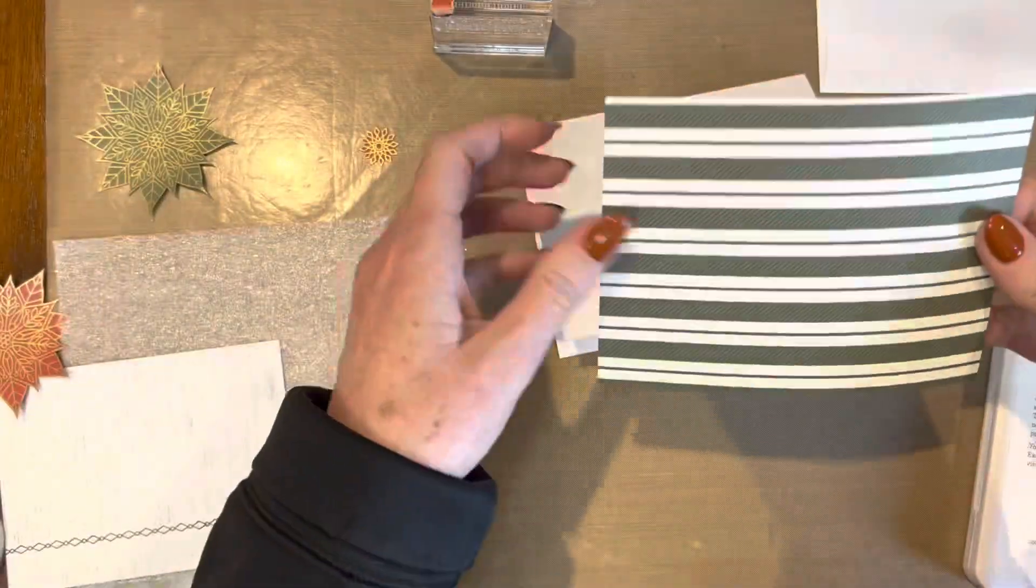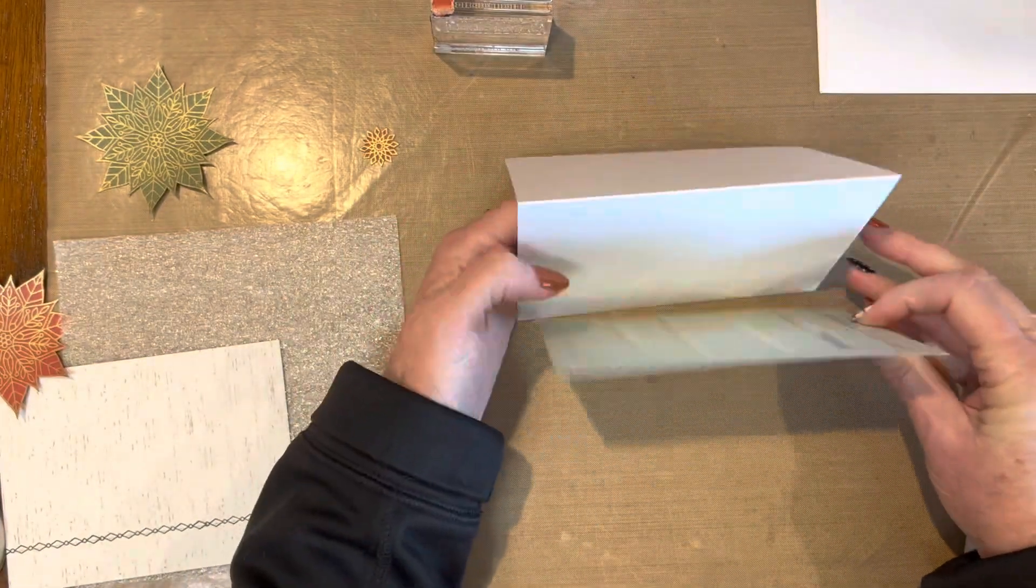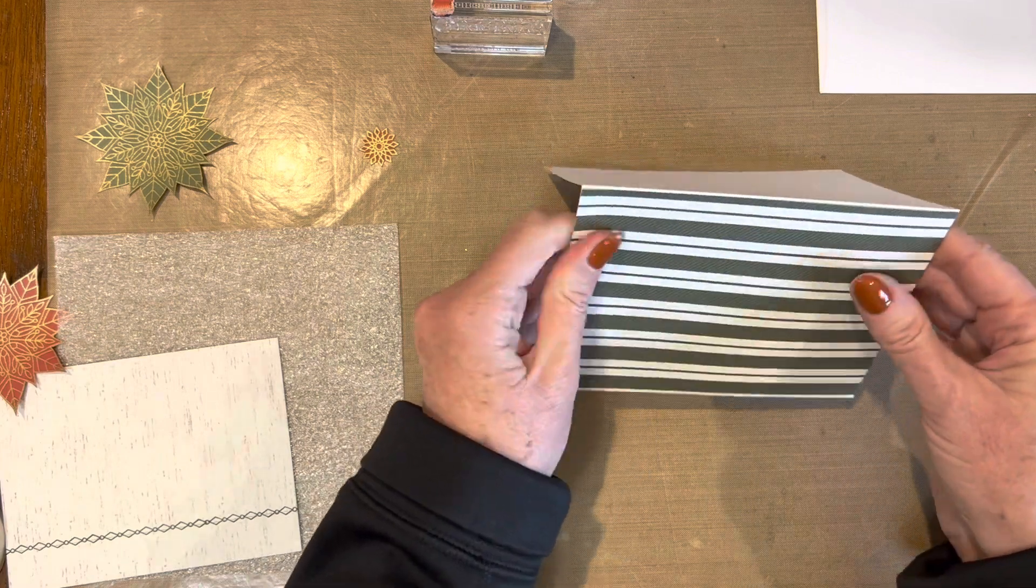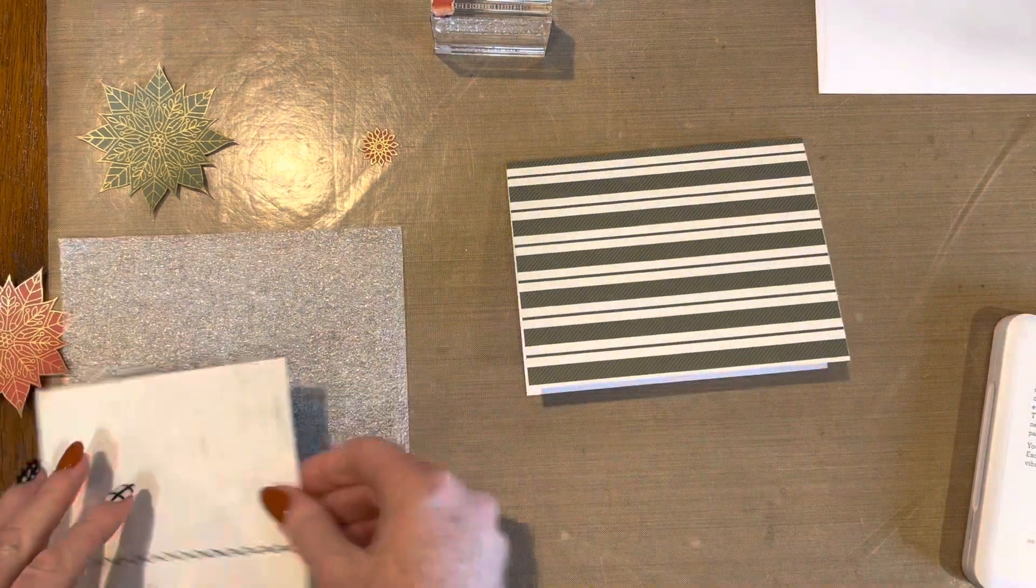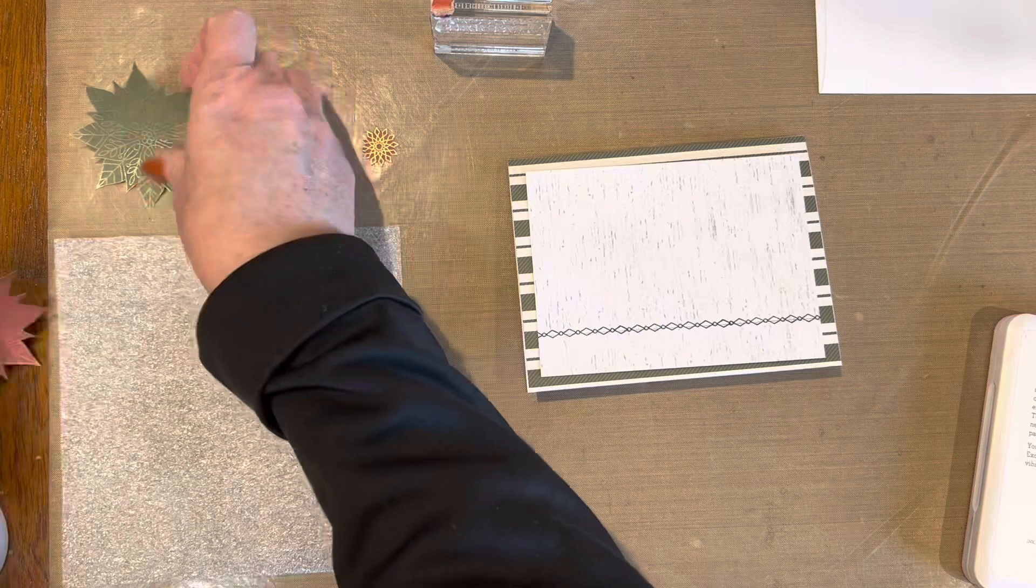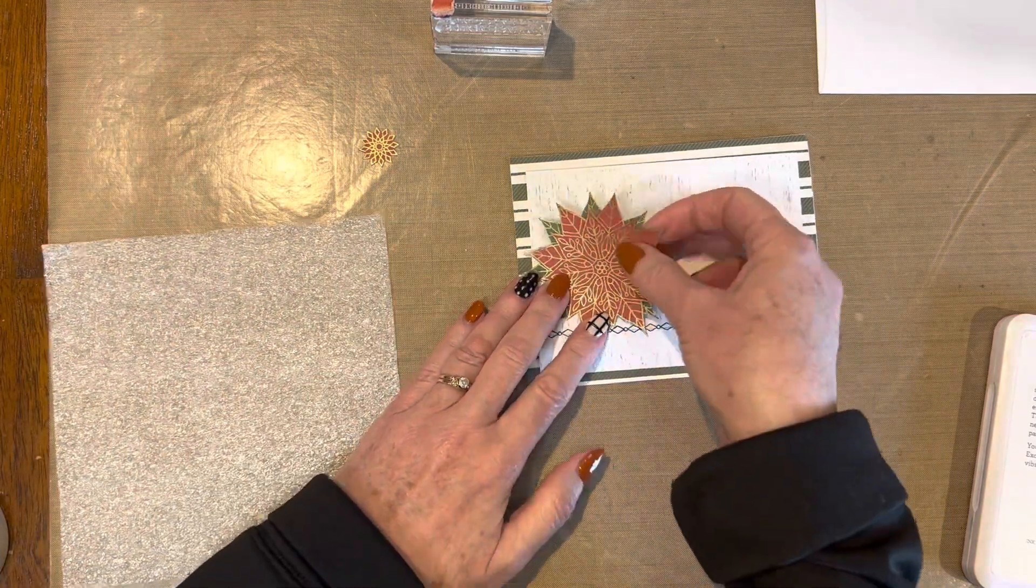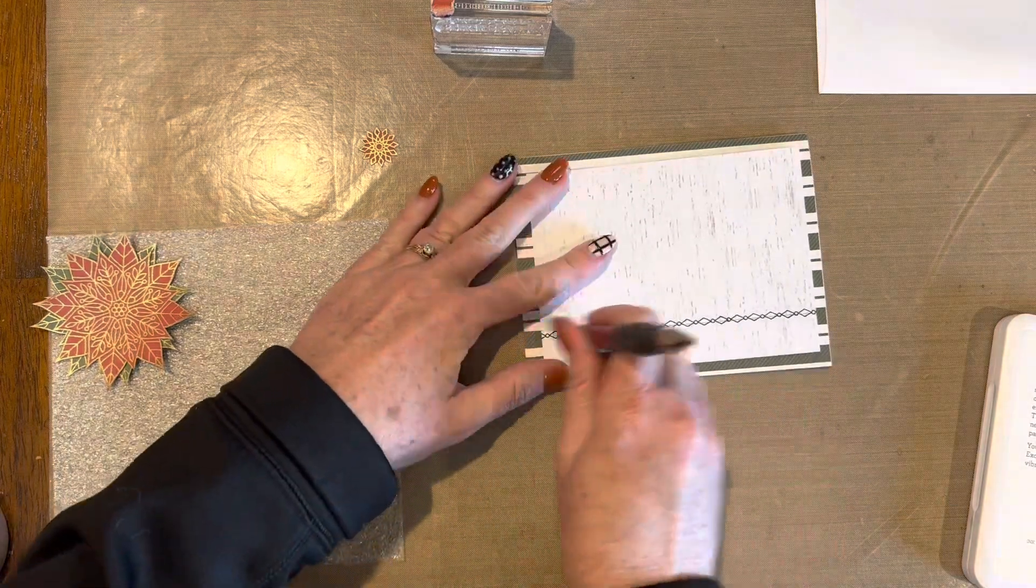Here I am putting that striped paper from the Four Seasons Winter Paper Pack onto my card base, and then I'm going to stamp with the Scarlet ink on that paper as well.